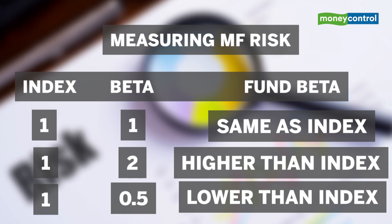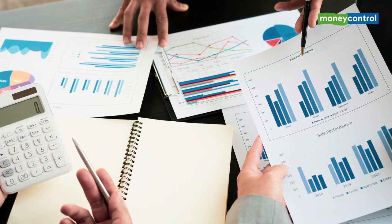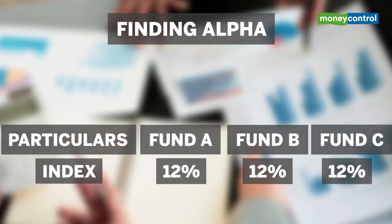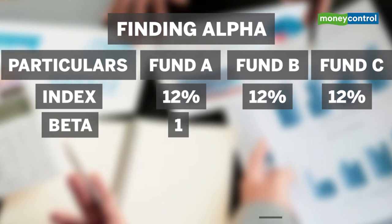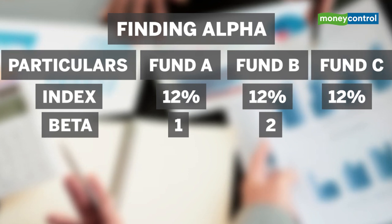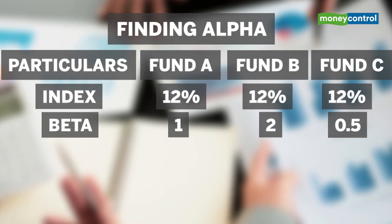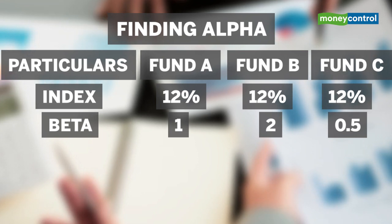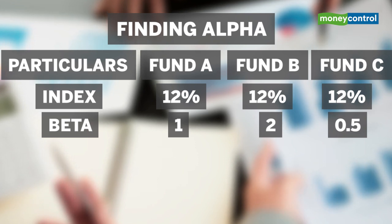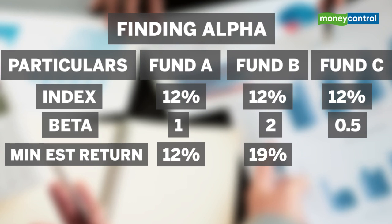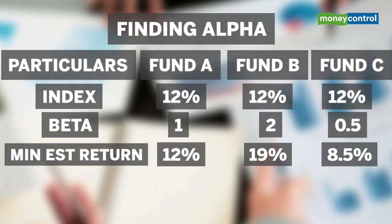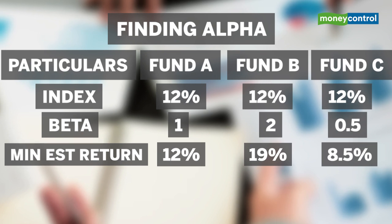The natural expectation is that a fund taking more risk should return more, and vice versa. Let's assume a set of three funds benchmarked to an index giving 12% returns. Fund A has a beta of 1, same as the index. Fund B has a beta of 2, double that of the index. Fund C has a beta of 0.5, half that of the index. If we take 5% as the risk-free rate of return and add 7% for every measure of risk taken, we get a minimum return expectation of 12% from fund A, 19% from fund B, and 8.5% from fund C. The expectation here is not just to beat the benchmark, but to deliver returns according to the measure of risk taken.